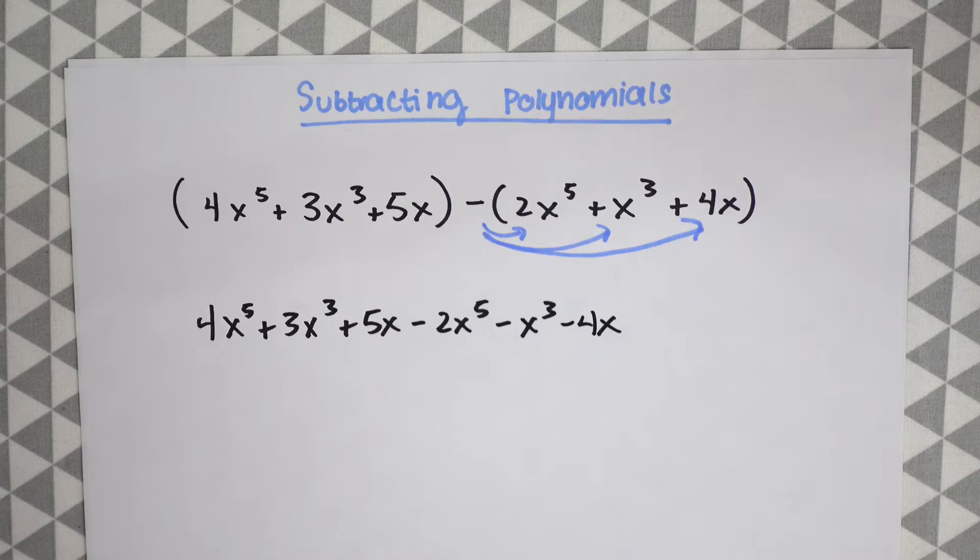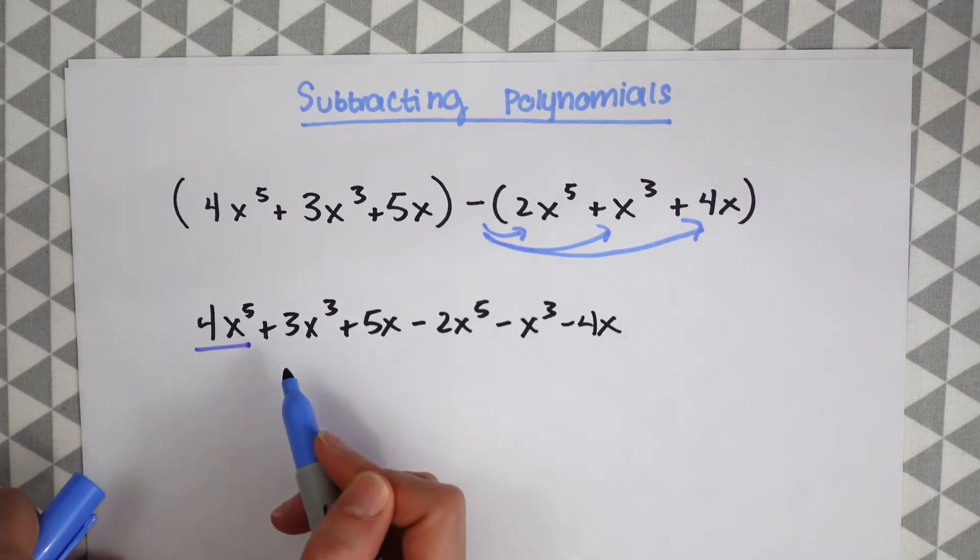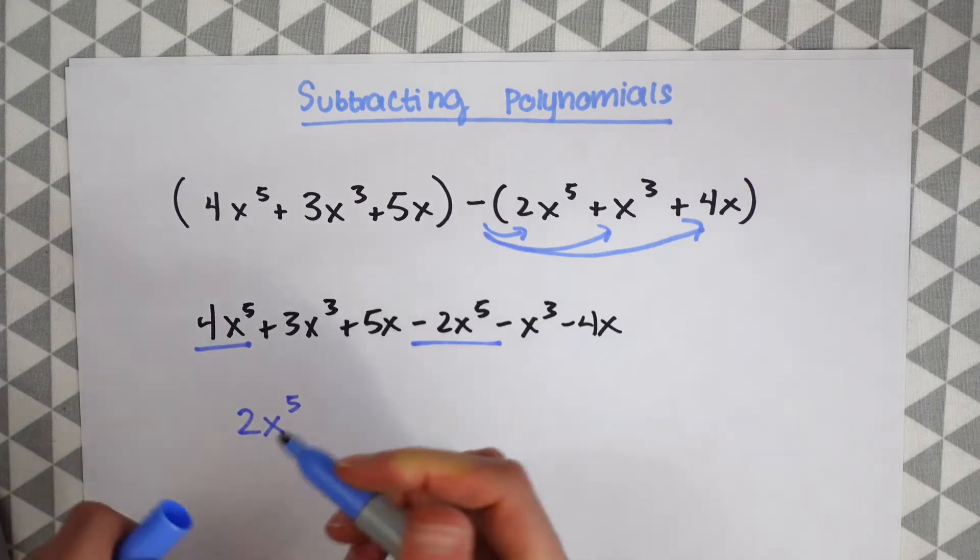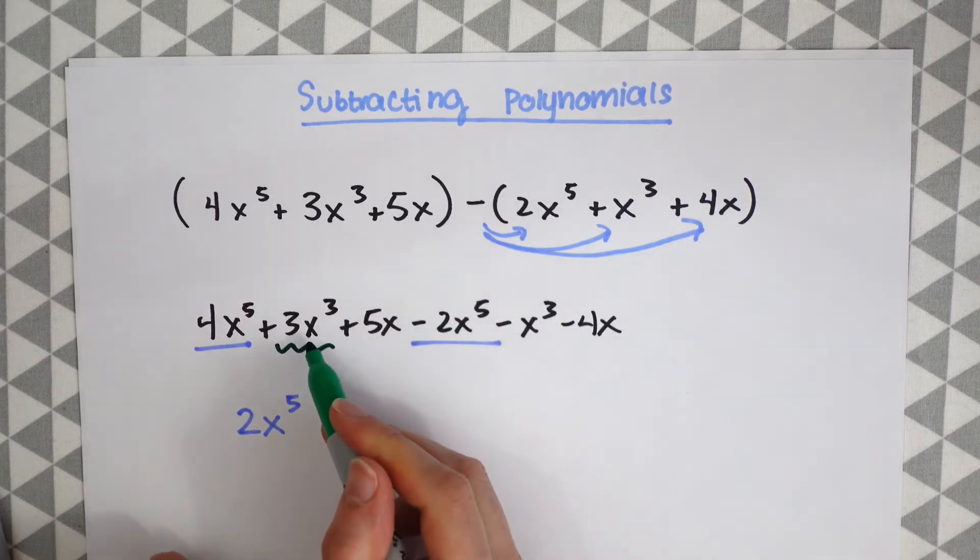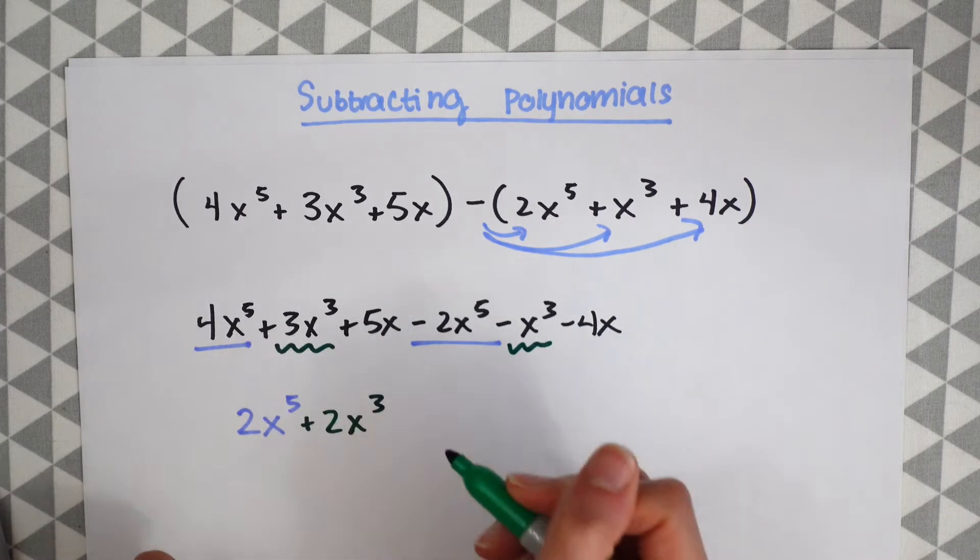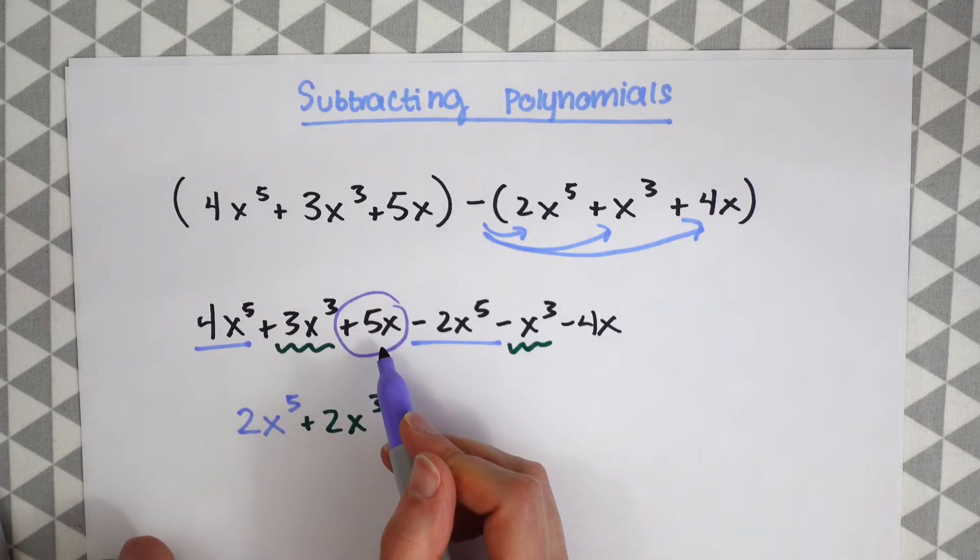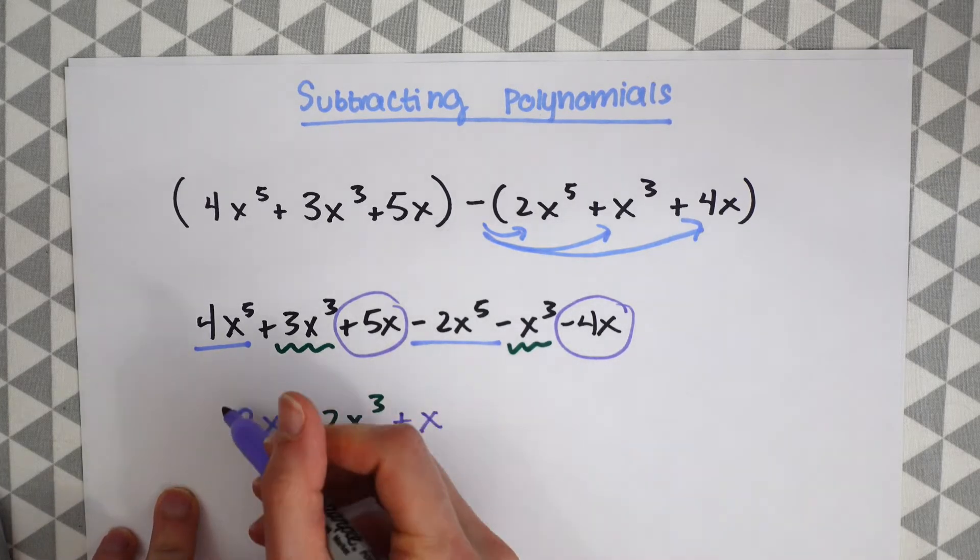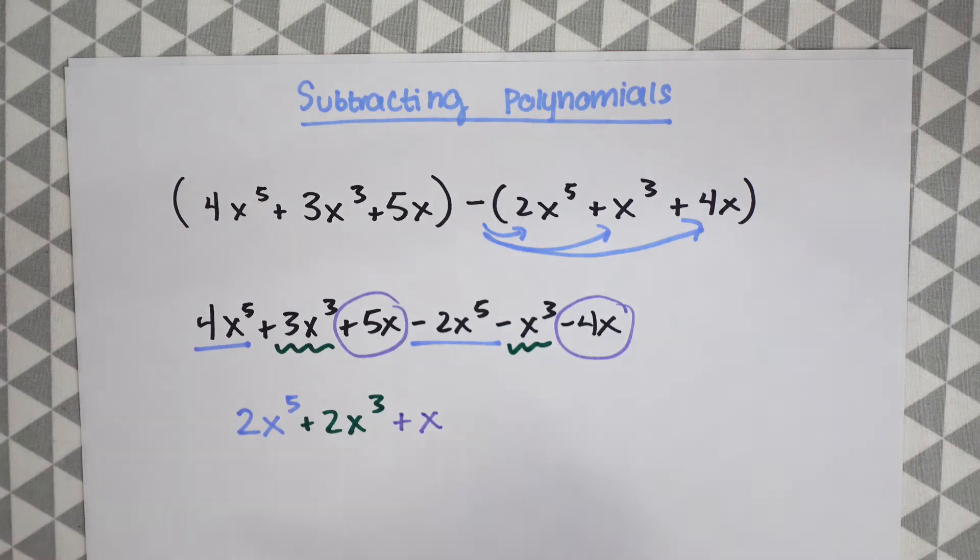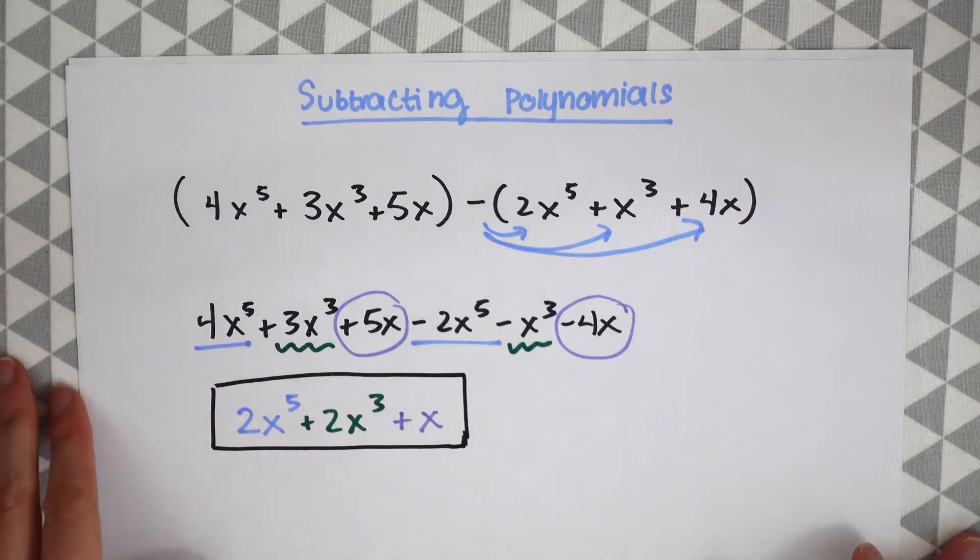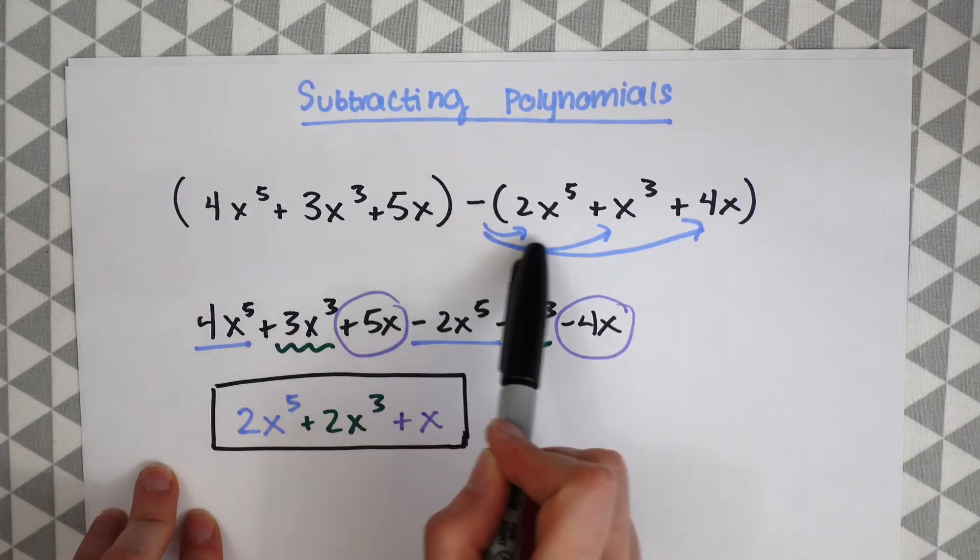So now we can just treat this like normal like we were when we were adding polynomials and just look for the like terms. So here we have 4x to the 5th and we have minus 2x to the 5th. So 4 minus 2 is just going to give us 2x to the 5th. 3x cubed minus x cubed over here will just give us positive 2x cubed. And then we have 5x which can be subtracted minus 4x. So 5 minus 4 will just give us plus x. So this gives us a final answer of 2x to the 5th plus 2x cubed plus x. So we're always just combining like terms when we're adding or subtracting polynomials. But the only thing about subtracting is to be careful with that minus sign and make sure you distribute.